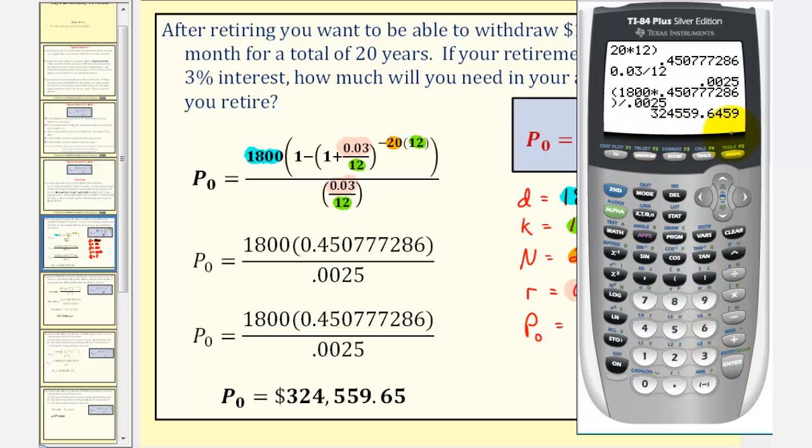Rounding to the nearest cent, notice that P sub zero is $324,559.65.